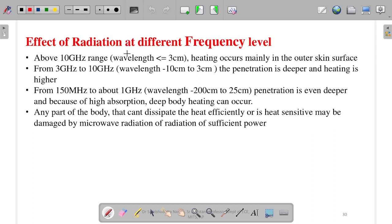Effect of radiation at different frequency levels - above 10 gigahertz range with wavelength less than or equal to 3 centimeters, heating occurs mainly in the outer skin surface. From 3 gigahertz to 10 gigahertz, penetration is deeper and heating is higher. Nowadays, 5G and 4G are used above 3 gigahertz. From 150 megahertz to 1 gigahertz, penetration is even deeper, and deep body heating can occur.